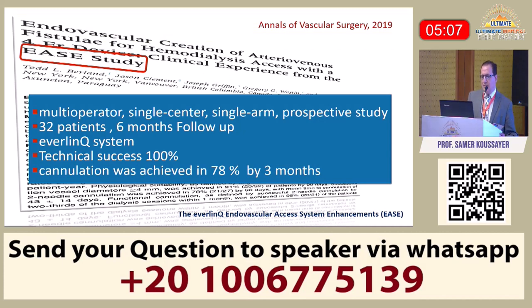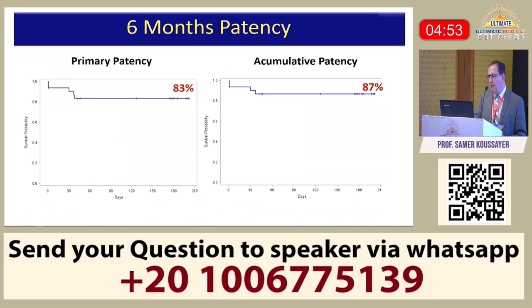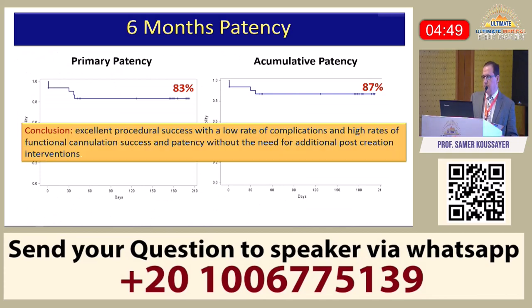A second study published in 2019 was a multi-operator, single-center, single-arm prospective study with 32 patients using the Everling device. Technical success was 100%, and cannulation was achieved in 73% at three months. Primary patency was about 83% and secondary patency was 87%. The conclusion was excellent procedure success with a low complication rate, high functional cannulation success, and good patency without the need for additional post-creation interventions.